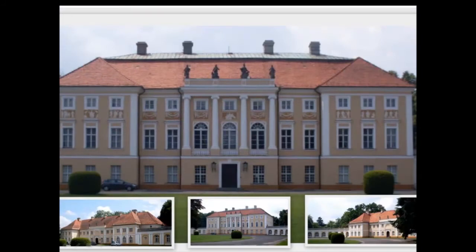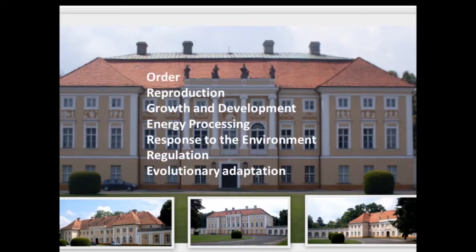Another example of a non-living thing is a building. Let's consider the properties of life as they apply to a building. Does a building display order? Yes — most buildings are organized. Does a building reproduce? No. Grow and develop? Sometimes — buildings might have additions built. Can a building process energy? No — energy enters the building in the same form it is used. Does a building respond to the environment? No. Are there systems in a building used to regulate its internal environment? Yes — buildings have systems to regulate their temperature, for example. Have buildings evolved over time? No. Sometimes non-living things like a building display some of the properties of life, but in order for something to be considered alive, it must display all the properties we talked about.